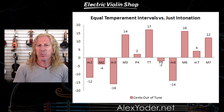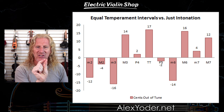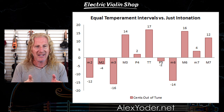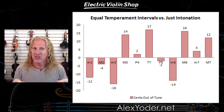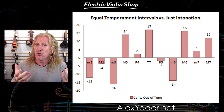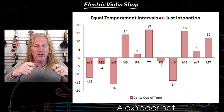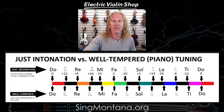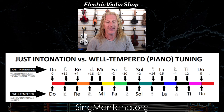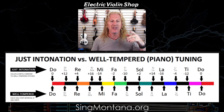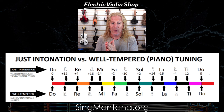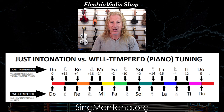It turns out the perfect fifth is actually just a hair out of tune on a piano. If you play a C and a G on a piano, they don't sound quite as juicy as they do on a violin when you tune it exactly right to your ear. Here's another visualization: just intonation — what your ear wants to hear — is on top, and well-tempered is on the bottom, and you can see how far apart some of these are.